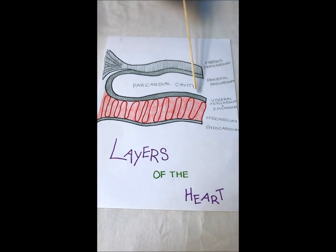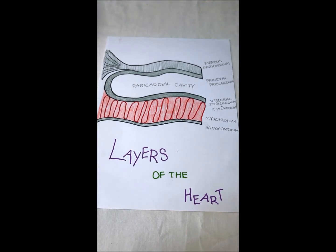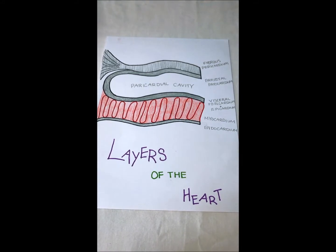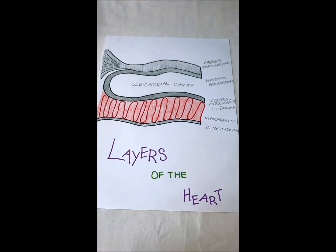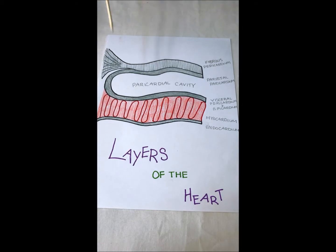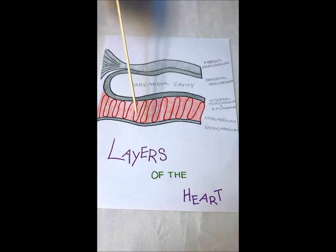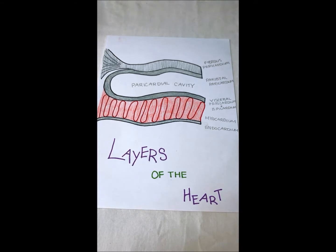Next, we have the epicardium. The epicardium is made up of simple squamous epithelium, and it also makes serous fluid. Then there is the myocardium, which is made up of cardiac muscle. Lastly, there is the endocardium, which is the inner lining of the heart, and that is made of simple squamous epithelium. It also helps smooth out blood flow.